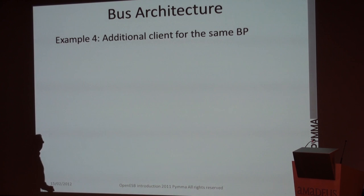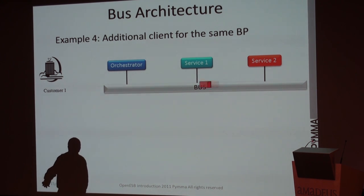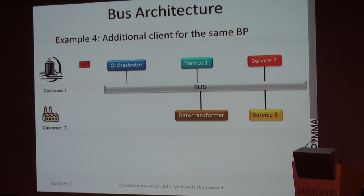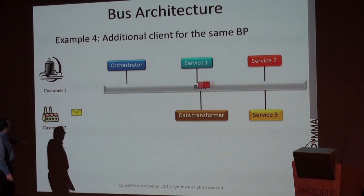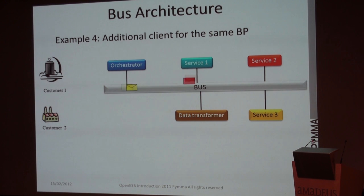Last example: I have a customer who has an application with service one as the core and service two for presentation. A new customer comes and says: 'I love your application, but the way you present the data and make the report is not convenient for me.' We create a new component — service three — that creates a report and presentation for that customer. Because the data structure for service three is different from service two, we add a data transformer, update the orchestrator process, and for the new customer's messages, it goes to data transformer first, then to service three. It's possible for the same application to have different ways to fulfill the business process.